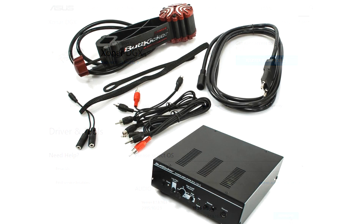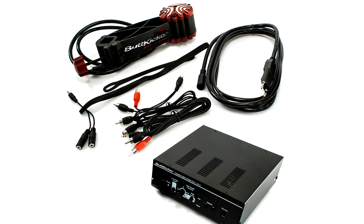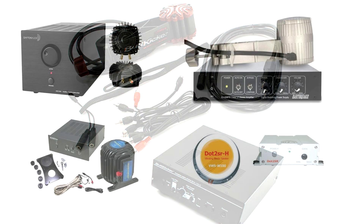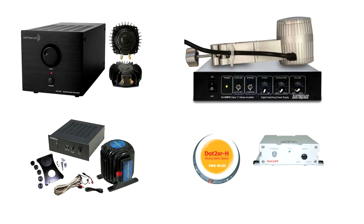One of the most common options for a transducer and amp is the ButtKicker Gamer 2. It comes with an amplifier, all the cables you require, and the transducer with a clamp. There are also many other options available on the market for transducers and amplifiers.